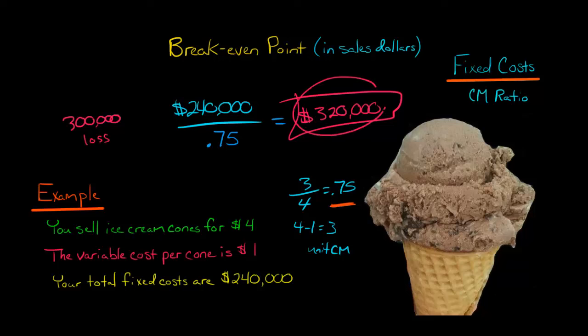But if we can go over $320,000 in sales, we're going to break even. So we're going to make a profit. Excuse me. If we hit $320,000 exactly, we'll break even. But if we did like $340,000 in sales, we'd make a profit.